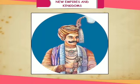The Decline of the Gupta Empire: Subsequent kings of the Gupta Empire were not as famous as Samudragupta and Chandragupta II. The rule of the Guptas continued till 570 CE. They had to fight many wars with the Huns, which made them weak.